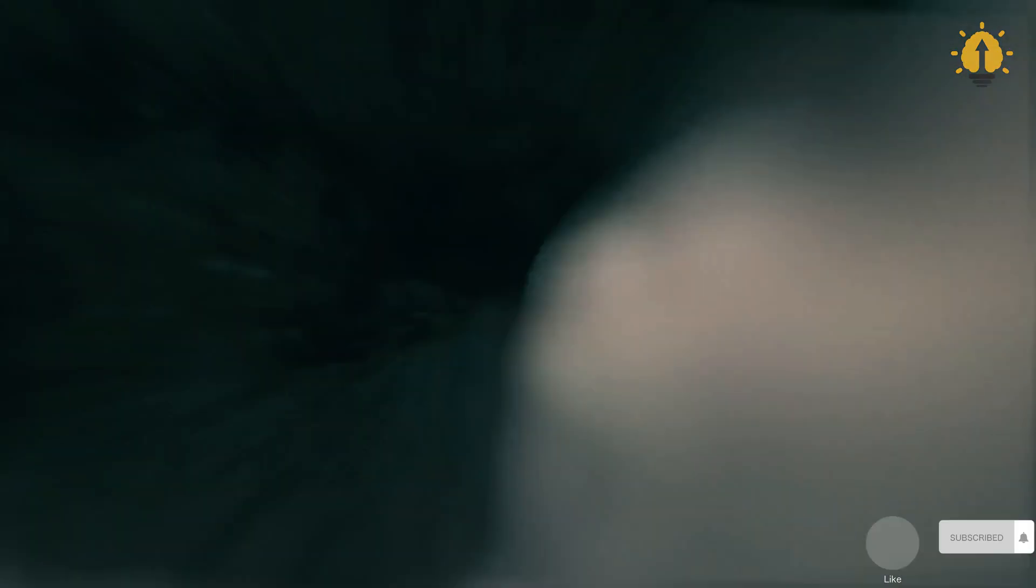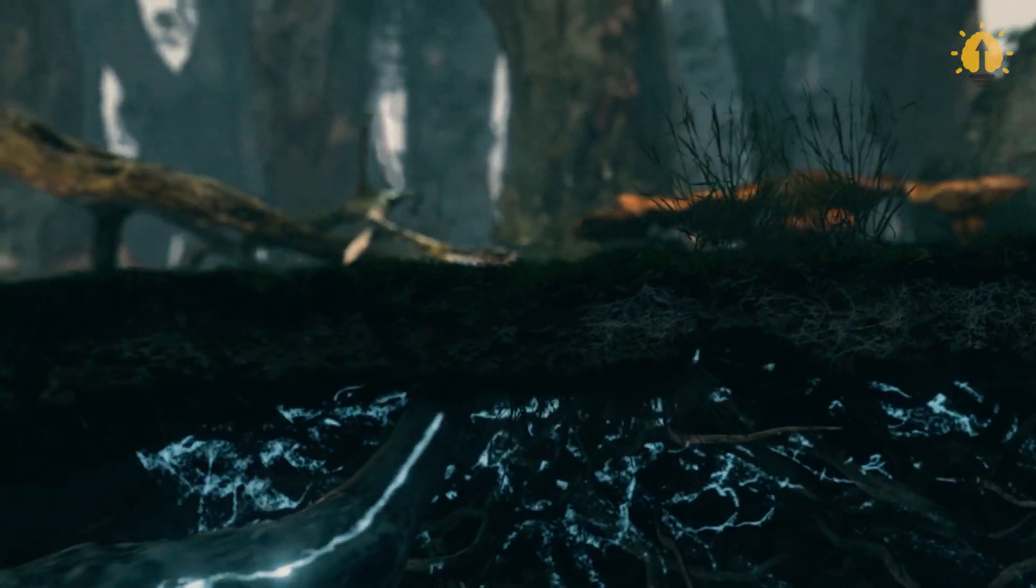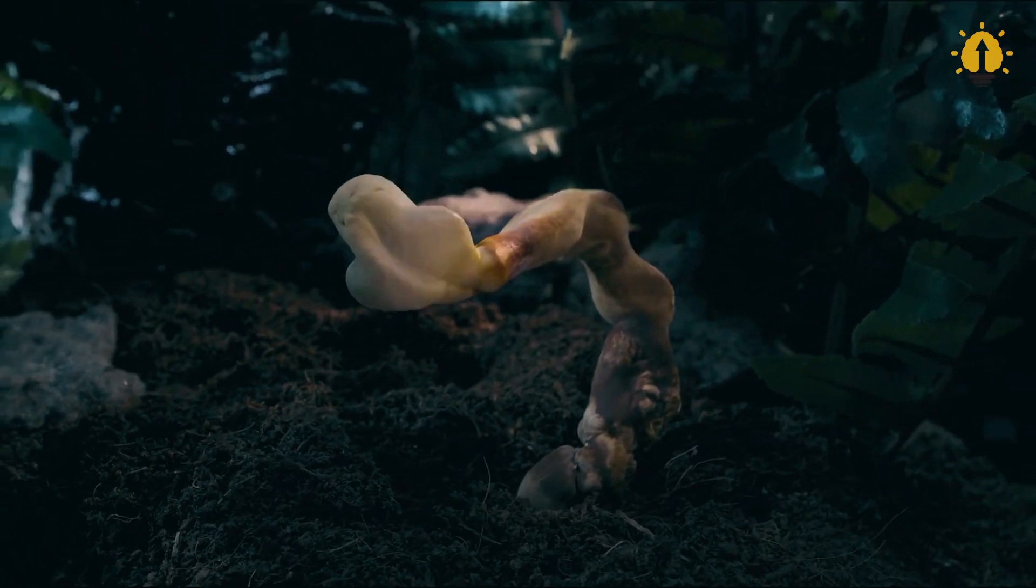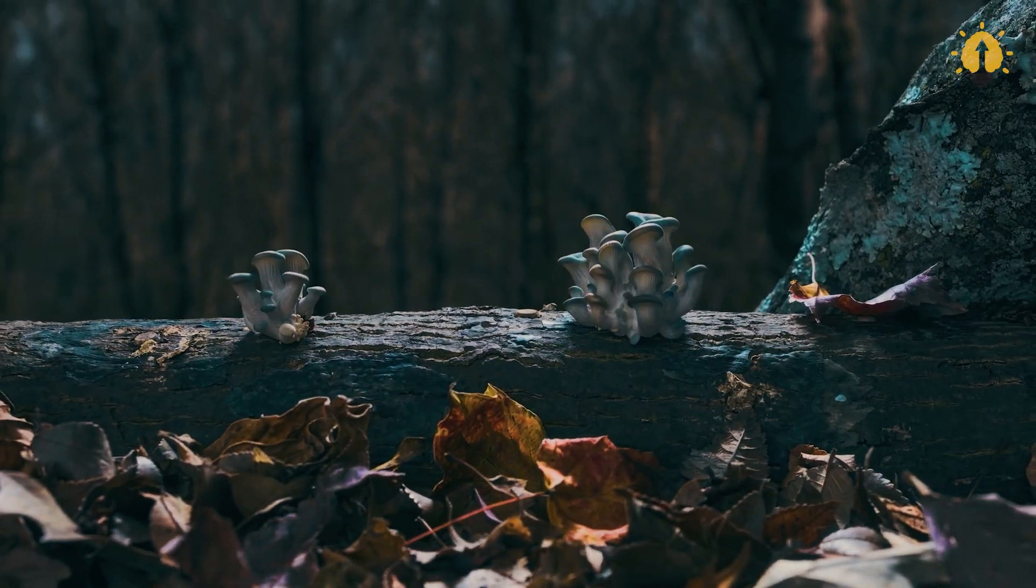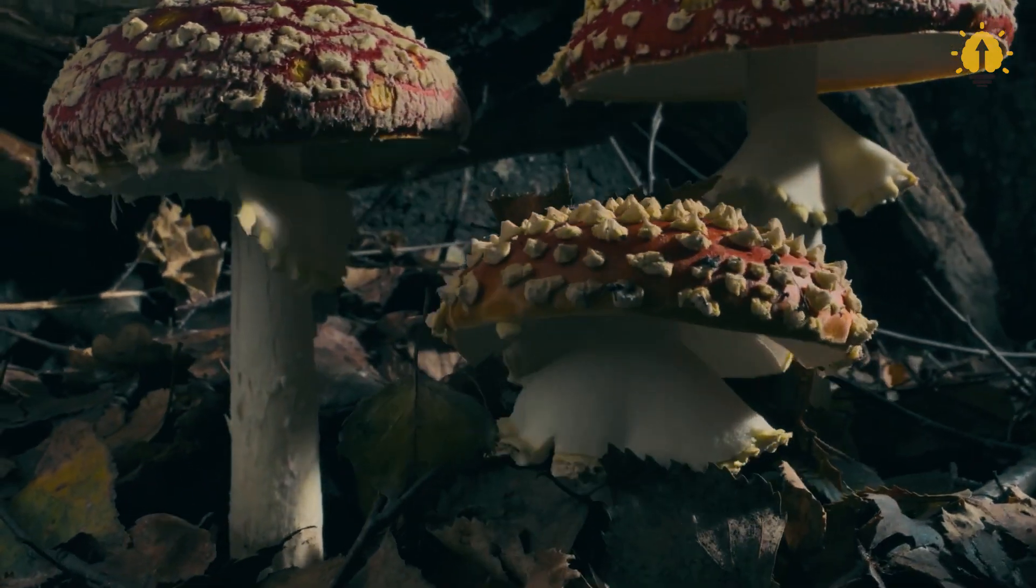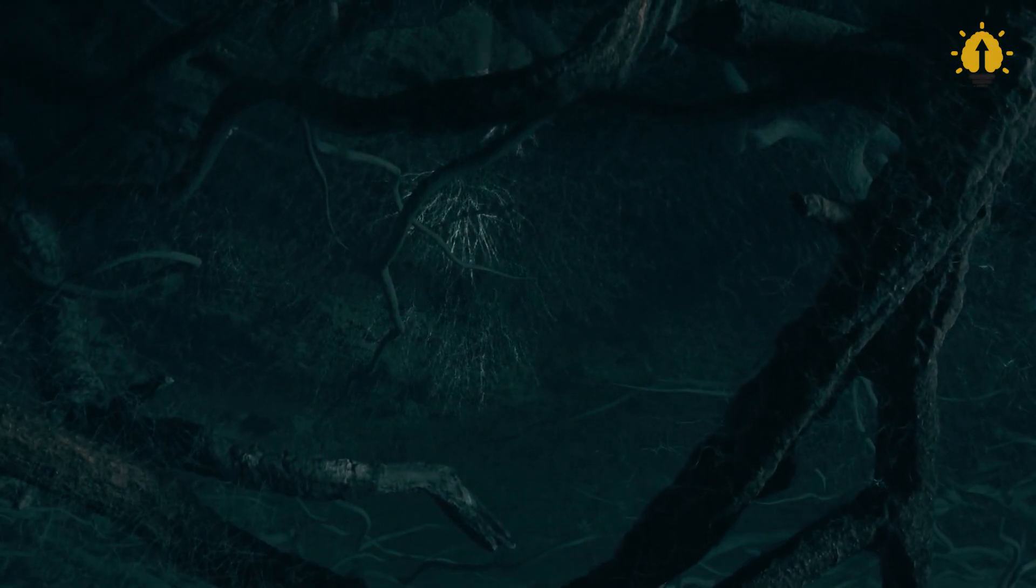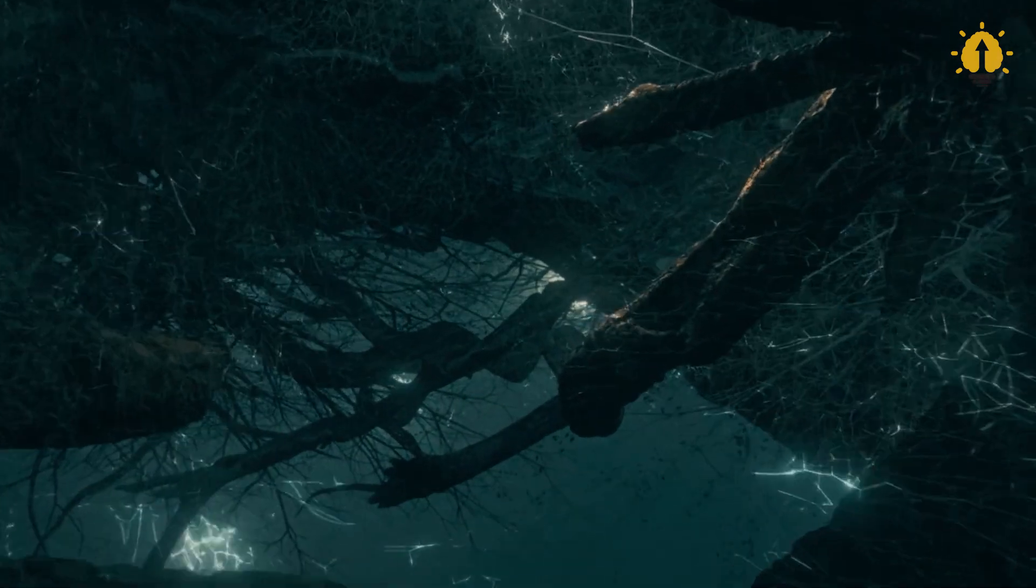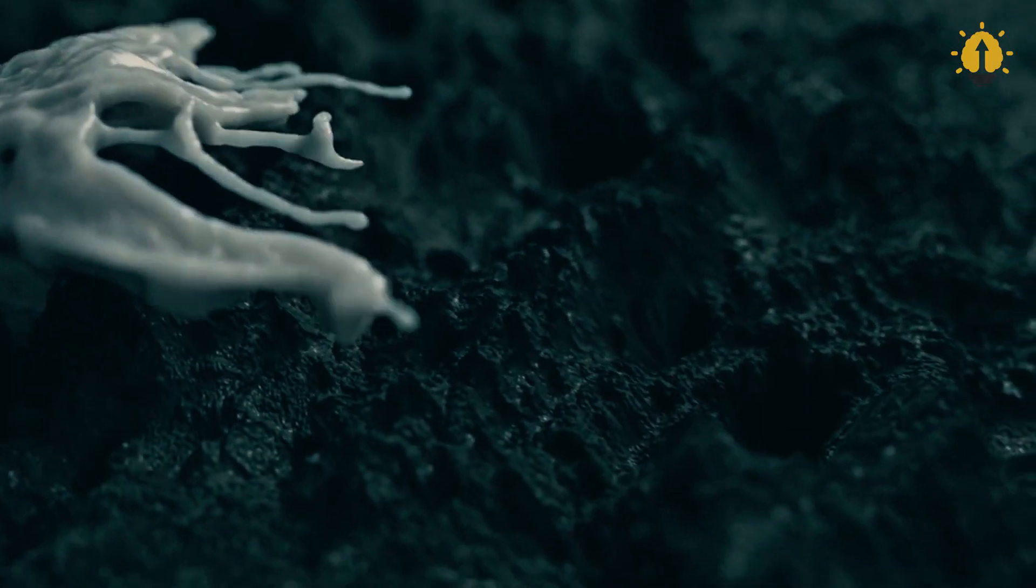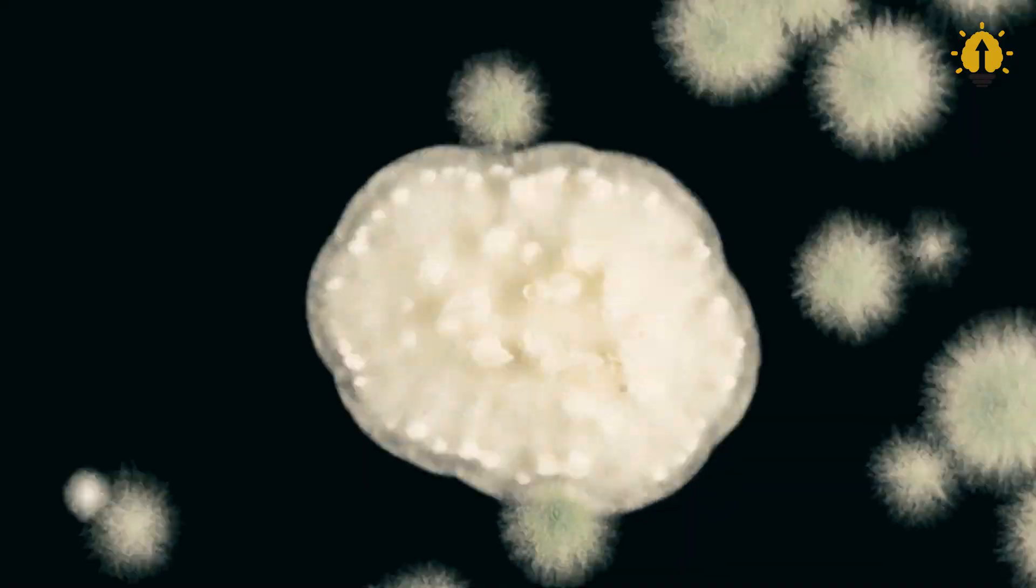When this giant mushroom, nicknamed the humongous fungus, was first discovered in 1998, it sparked debate about what constitutes an individual organism. However, researchers have since settled the score, concluding that, if a lifeform consists of genetically identical cells that can communicate with one another, it deserves the title of a single organism. And that's precisely why the humongous fungus takes the crown as the largest known organism in the world based on the sheer area it covers.